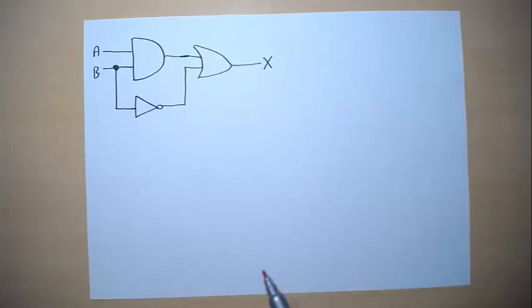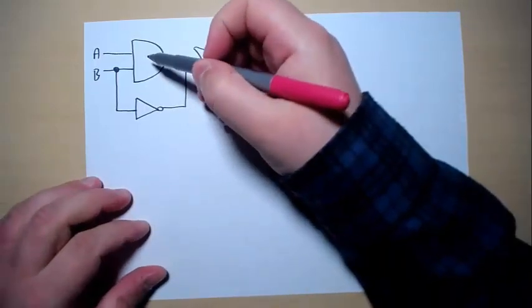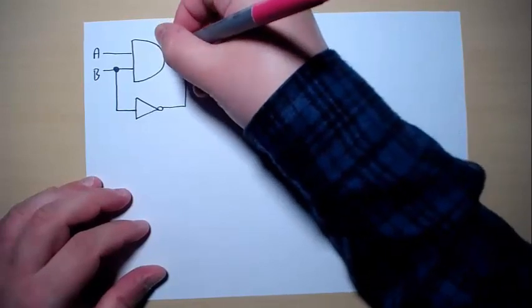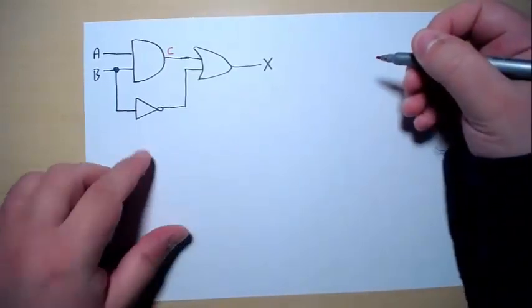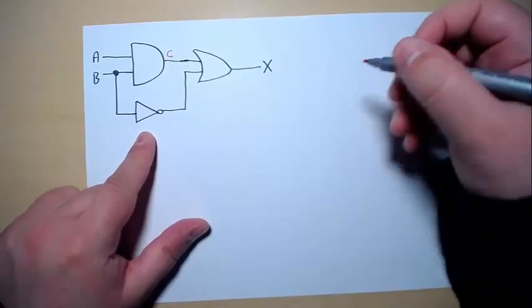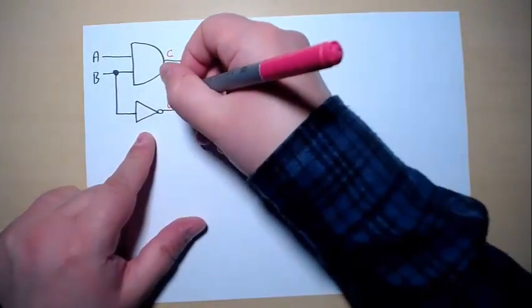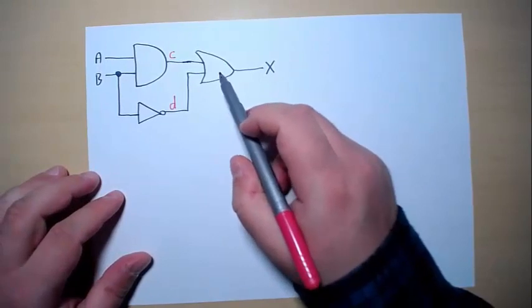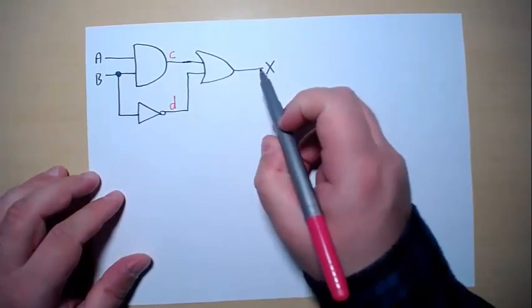So for example here we have this AND gate and it gives this output so I'm going to label this as C. And here we have this NOT gate. I'm going to label its output as D. The final gate gives output X so we don't have to label it.